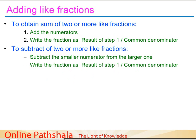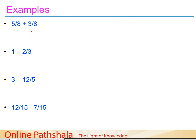Let us summarize addition and subtraction of like fractions. To find the sum of two or more like fractions, simply add the numerators and write the result over the common denominator. Similarly, to subtract like fractions, subtract the smaller numerator from the larger one and write the result over the common denominator, since the denominator does not change. Now let us look at some examples.